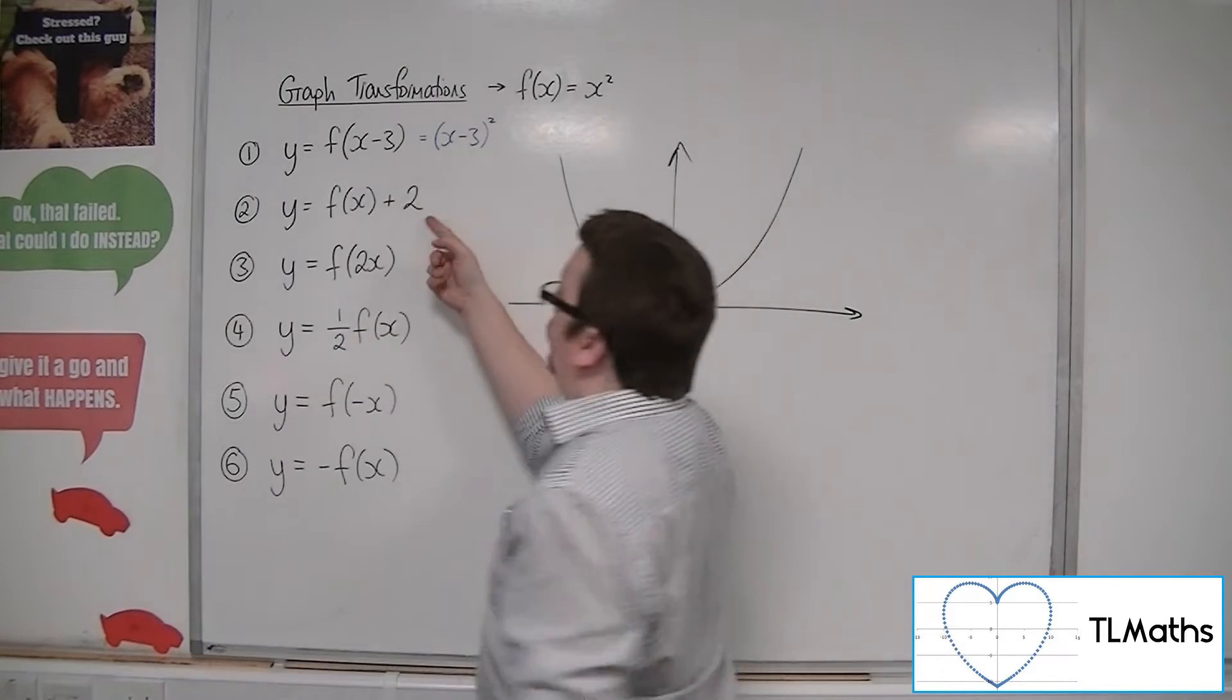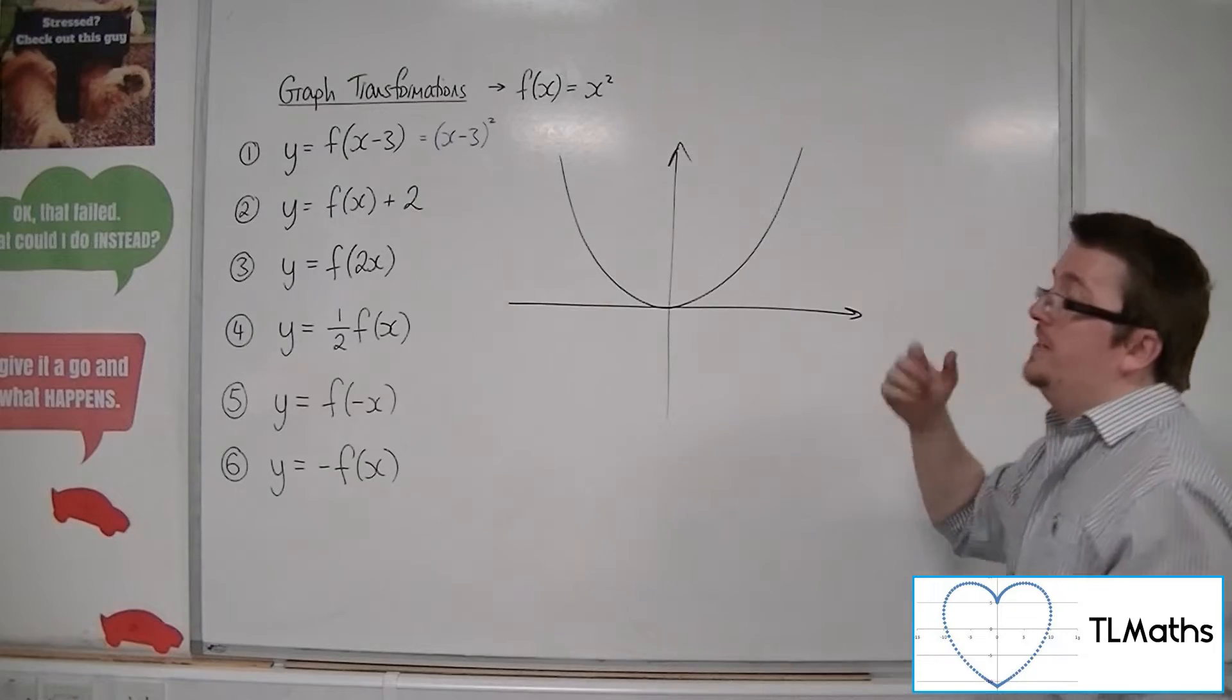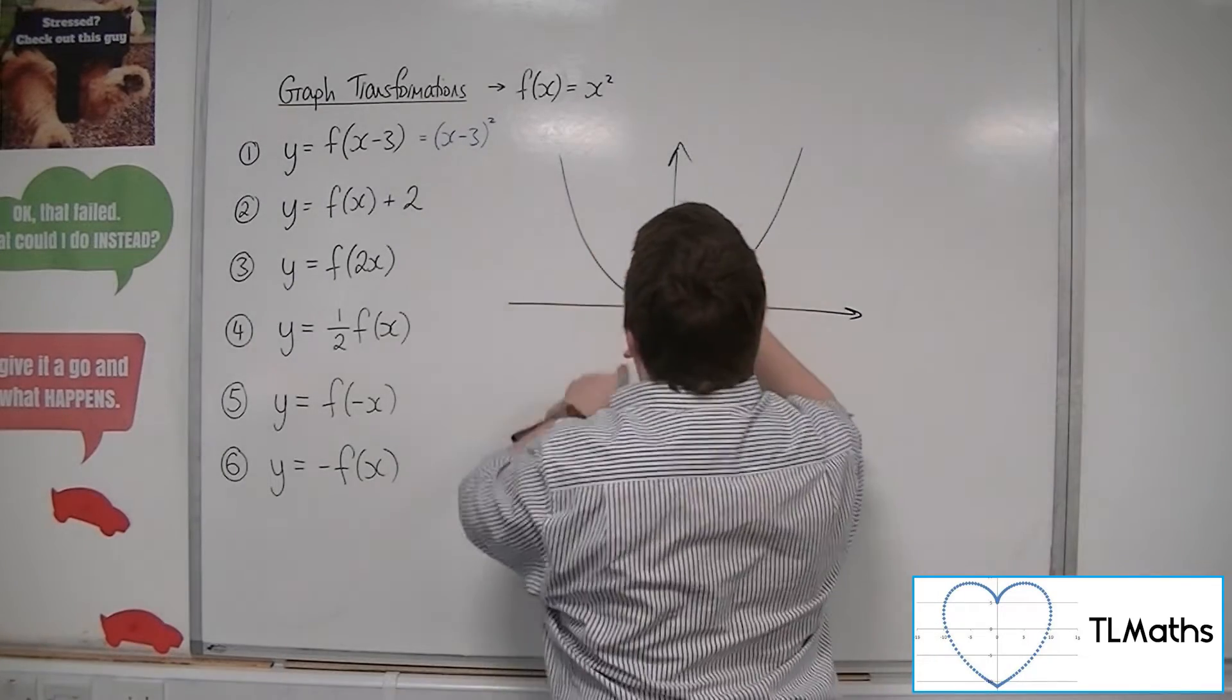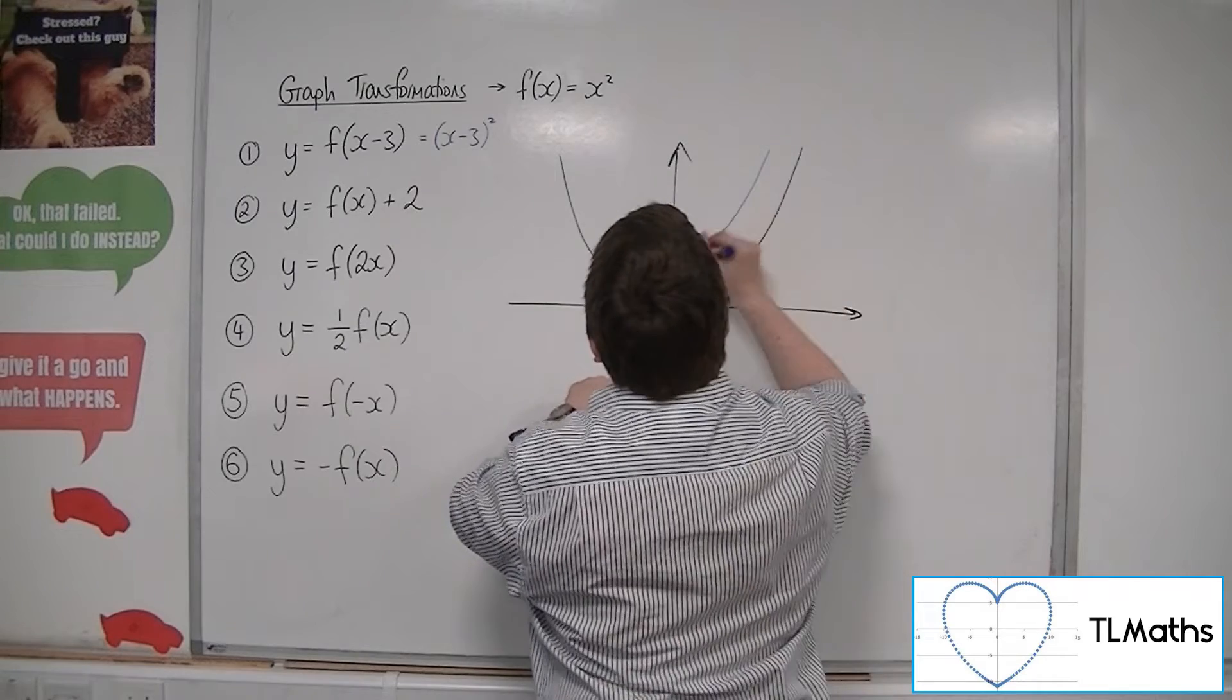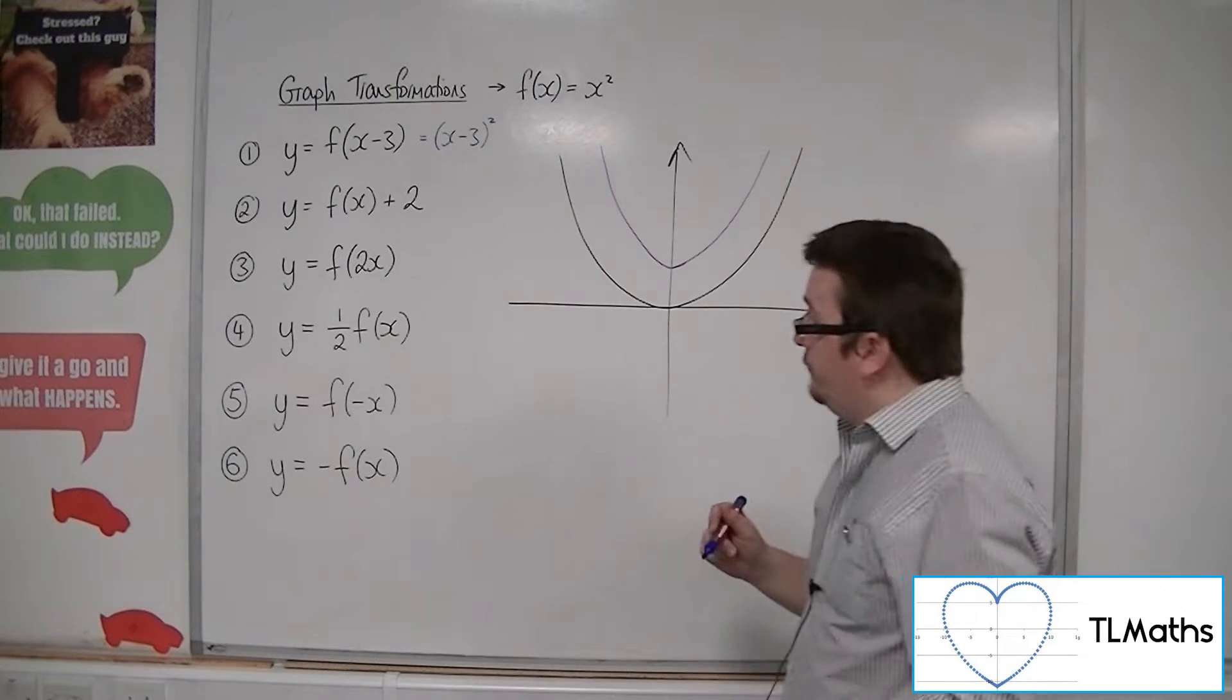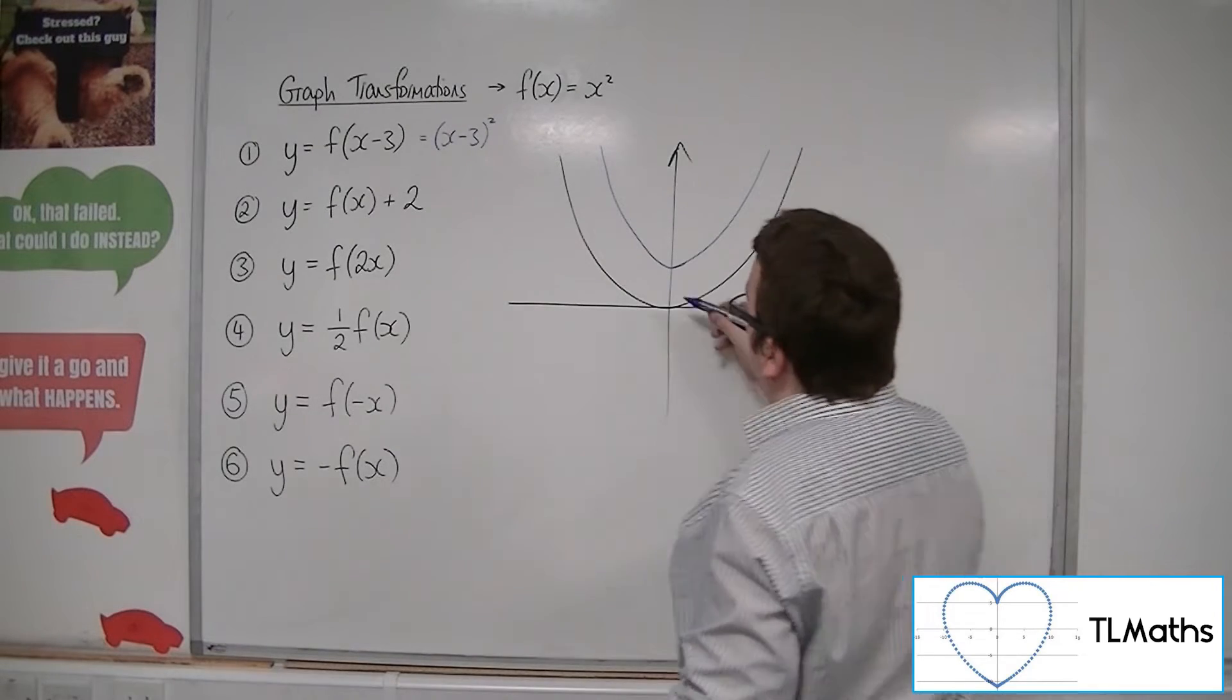This is also a translation, but this time by the vector 0, 2. So the curve is moving 2 units up. Once again, you can redraw it using the vertex.